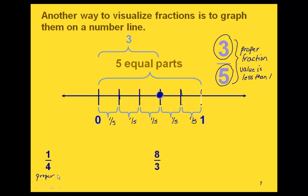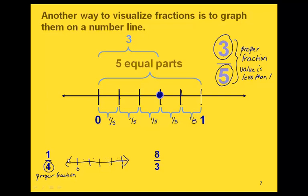Let's graph 1 fourth. Again, we notice this is a proper fraction, so we go from 0 to 1 on our number line and divide that space into four equal parts: 1, 2, 3, 4. The number of parts we're representing is 1, so we start at 0 and count over 1. That gives us the graph of 1 fourth.